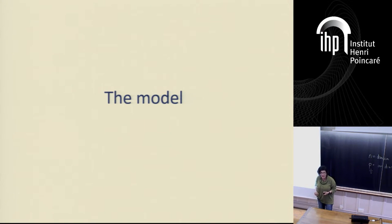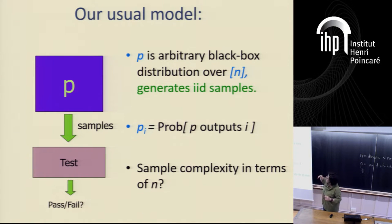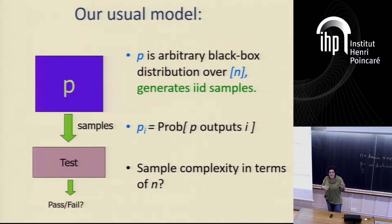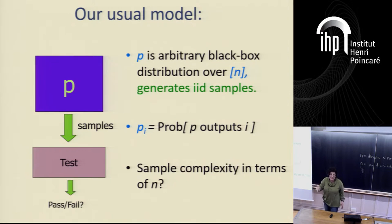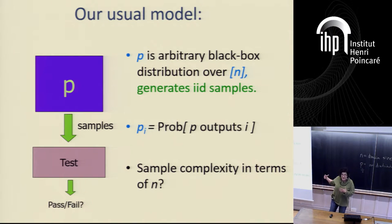Let's get to the model. You get a black box — you get to push a button, out comes a sample. That's the model. This is a distribution over a domain which for now I'll assume is unstructured, and I'm just going to give arbitrary labels to the domain elements — call them one through N. The algorithm knows the size of the domain N. Every time I push a button I get a sample, IID. No correlations. There's some underlying probability distribution P. P sub i is the probability that P assigns to domain element i — that is not known to us.